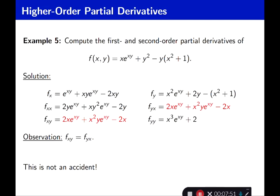For f_y, x is constant, so the derivative of e^(xy) with respect to y is e^(xy) times x, giving x²·e^(xy). The derivative of y² is 2y, and the derivative of y(x² + 1) is negative(x² + 1). So f_y = x²·e^(xy) + 2y − (x² + 1). To find f_xx, take the derivative of f_x once more with respect to x; the derivative of e^(xy) gives y·e^(xy), and xy·e^(xy) requires a product rule giving two more terms.